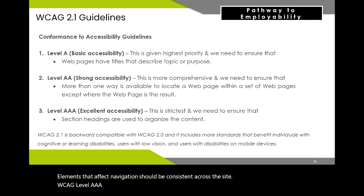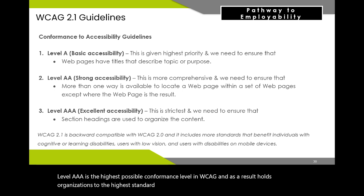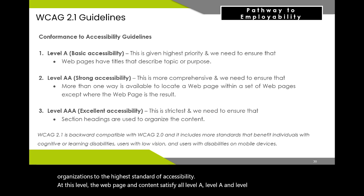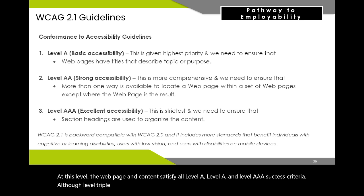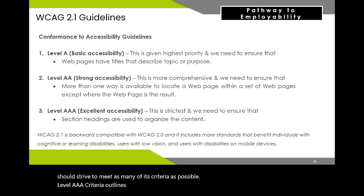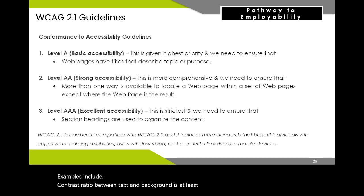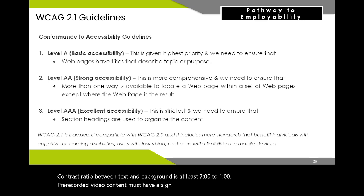WCAG Level AAA is the highest possible conformance level, holding organizations to the highest standard of accessibility. At this level the web page satisfies all Level A, Level AA, and Level AAA success criteria. Although Level AAA may not be applicable or realistic for everyone to achieve, organizations should strive to meet as many of its criteria as possible. Level AAA outlines an extra 28 requirements from those outlined at Level AA. Examples include: contrast ratio between text and background of at least 7 to 1; pre-recorded video content must have a sign language translation; and extended audio description should be provided for pre-recorded videos.